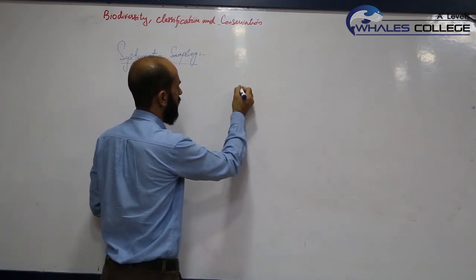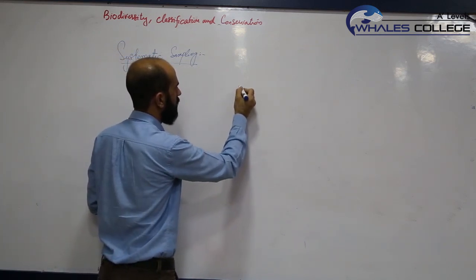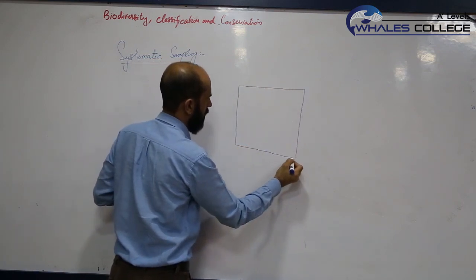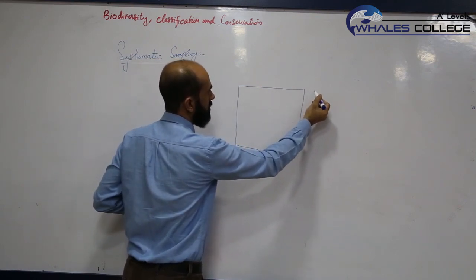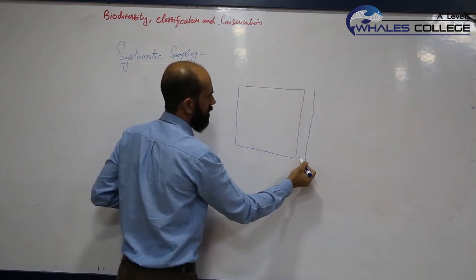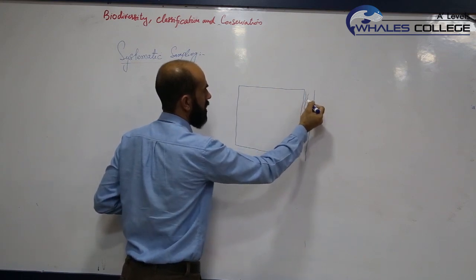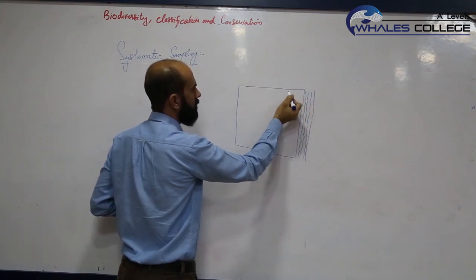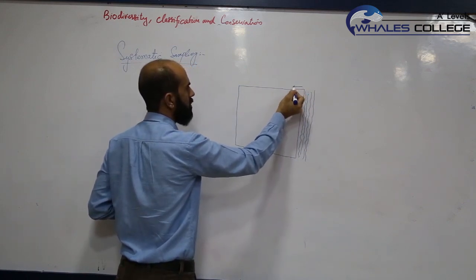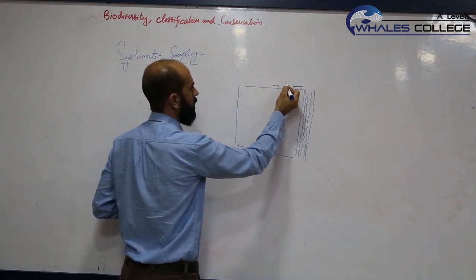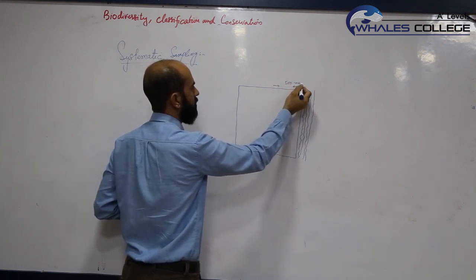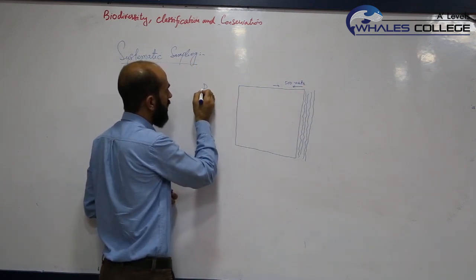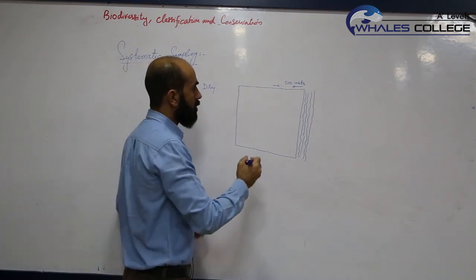I'm giving you an example. Like here is a field, a habitat, and just near this habitat we have a canal or river. There's a lot of water and the effect of this water is about 500 meters.